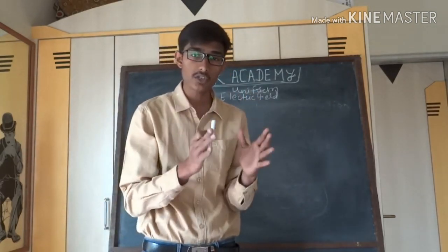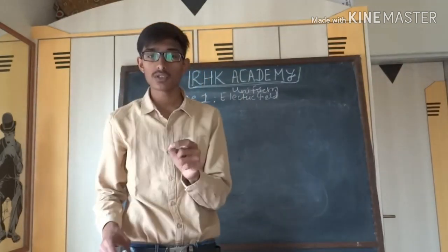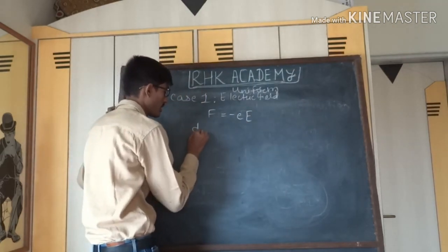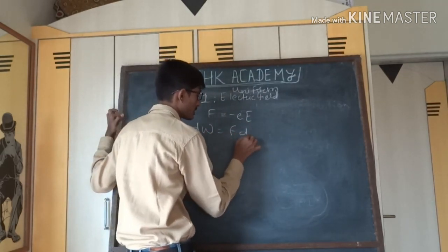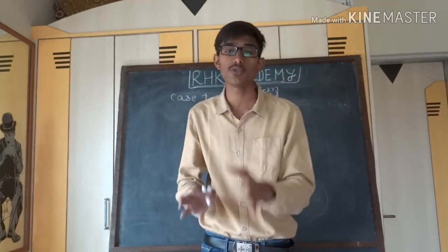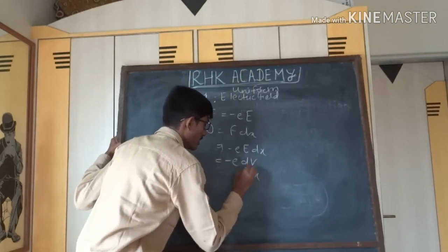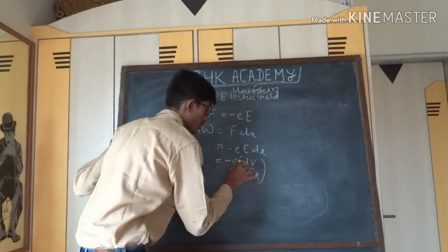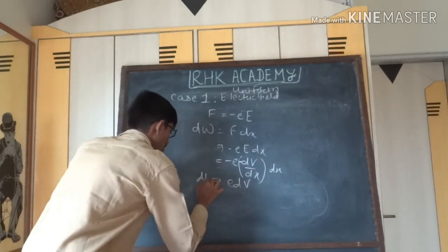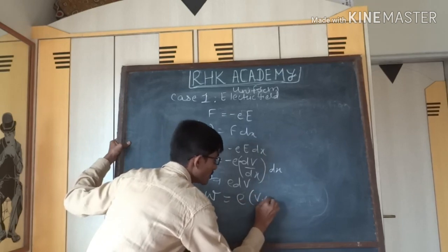Next we need to find the energy acquired by the electron in this uniform electric field applied parallel to its motion. The force on the electron is F = −eE. Work done dW = F dx. Using the relation that electric field equals the negative potential gradient, E = −dV/dx, substituting gives dW = e dV. Integrating both sides, work done W = e(V₂ − V₁).